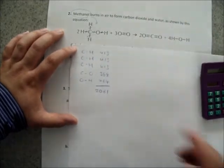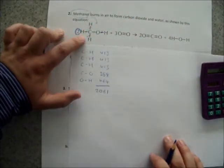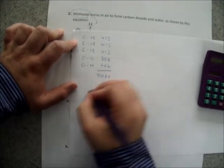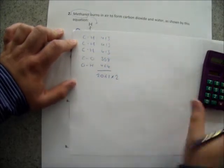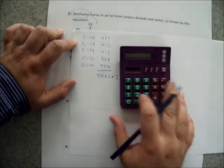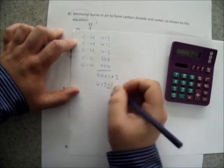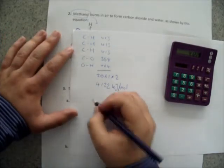Leaving us with 2061 kilojoules per mole. But, in this question, they've given you two moles of methanol, not one. So this is for one mole of methanol, therefore I need to multiply this number by two. And that's going to leave us with 4122 kilojoules per mole. And that's for methanol.